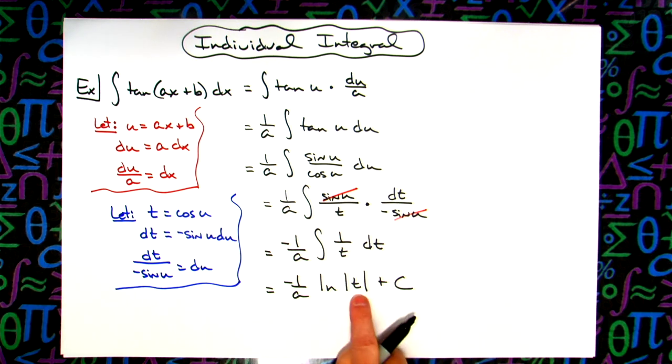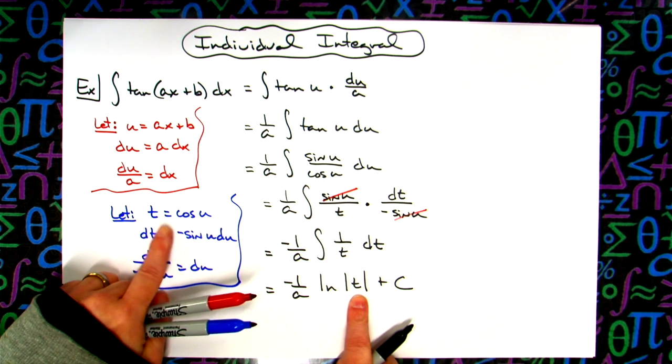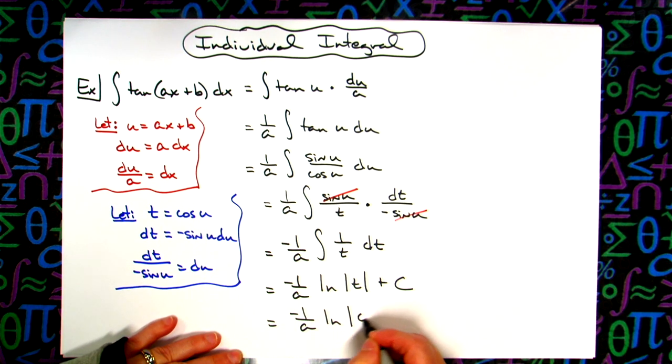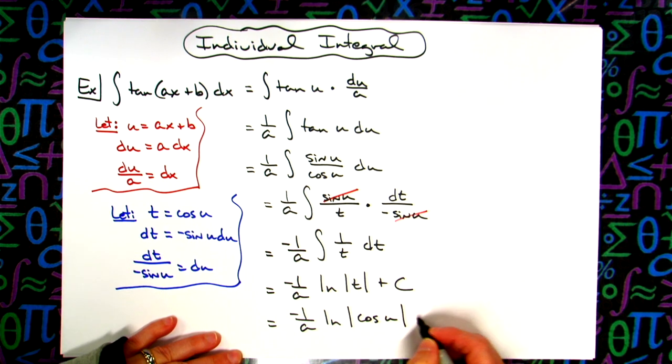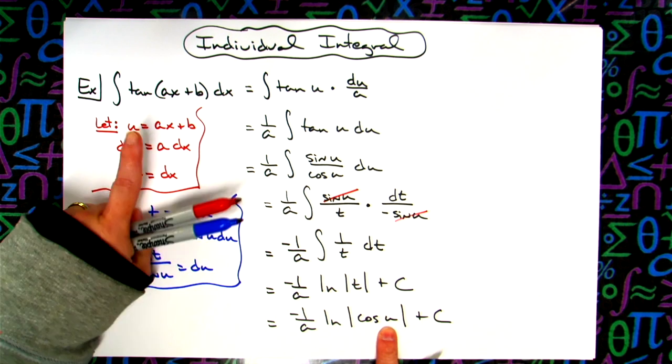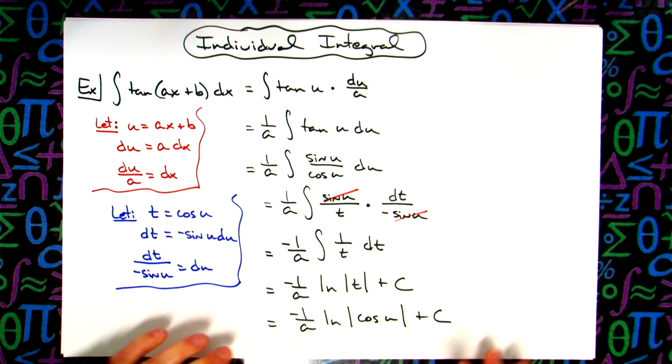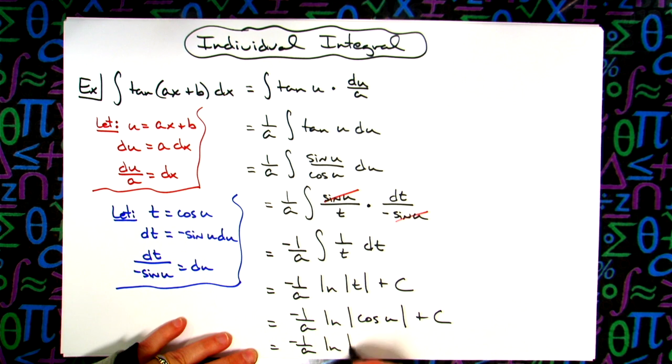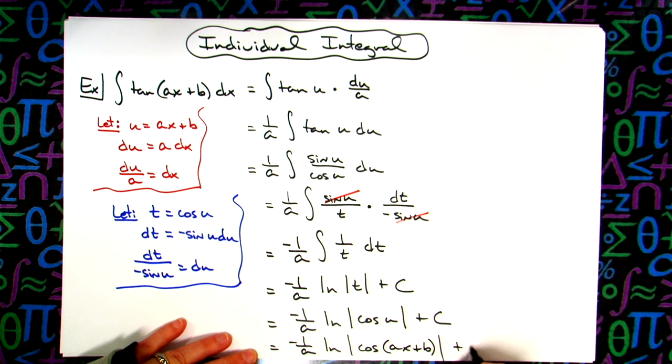At this point I can replace t with cosine u. So I'll have negative 1 over a natural log absolute value cosine u. The last step is to put back in u. So we have negative 1 over a natural log absolute value cosine of ax plus b plus c.